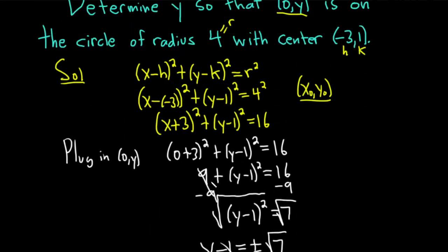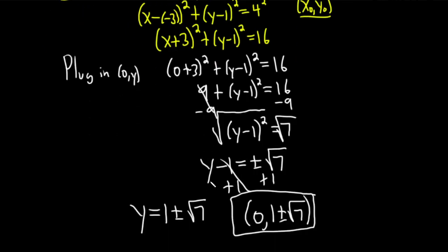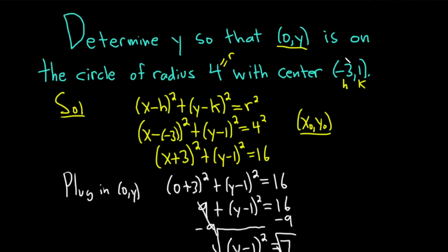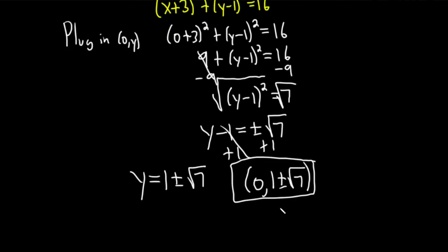So that's it. We found two points that lie on the circle of radius 4 with center (-3, 1) with x-coordinate 0. We determined the value of y and there are two such values: 1 + √7 and 1 - √7. I hope this video has been helpful. Good luck.